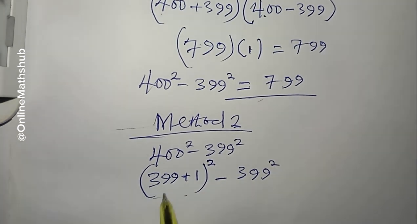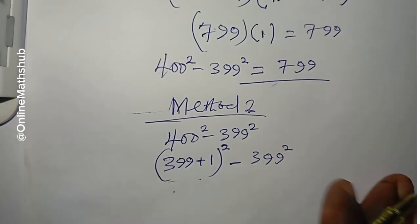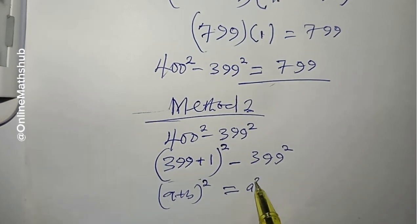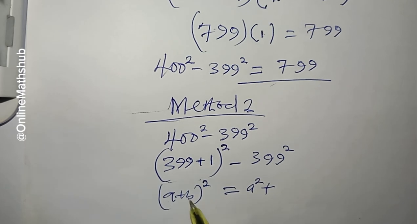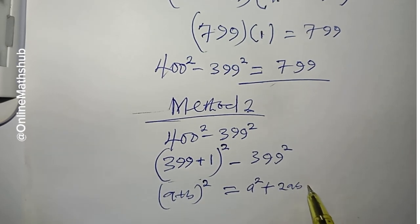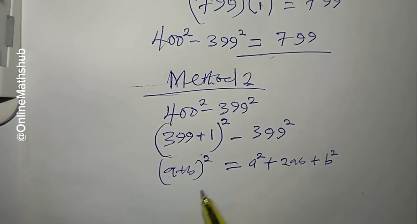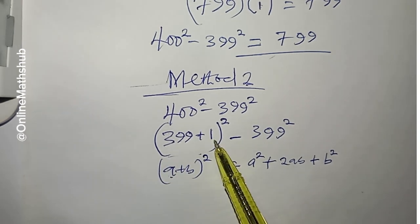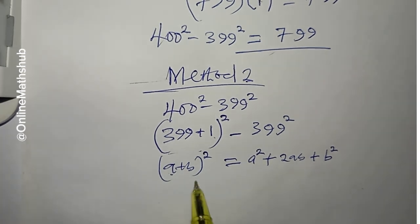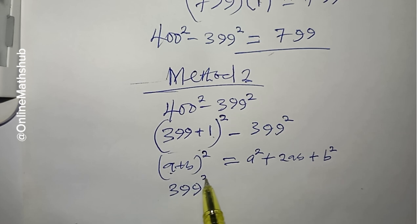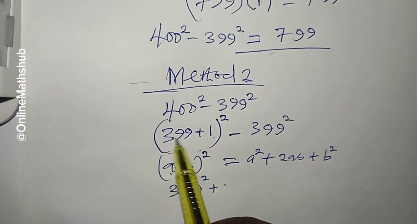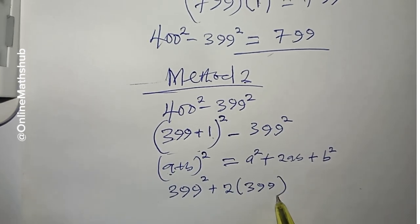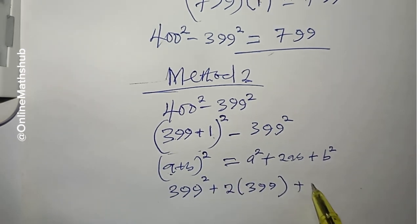We can go ahead and simplify this. If we have (a + b) all raised to power 2, we can expand it as a squared plus 2ab plus b squared. Applying that here, our a is 399 and b is 1. So we get 399 squared, plus 2 times 399 times 1, which is 2 times 399, plus 1 squared.